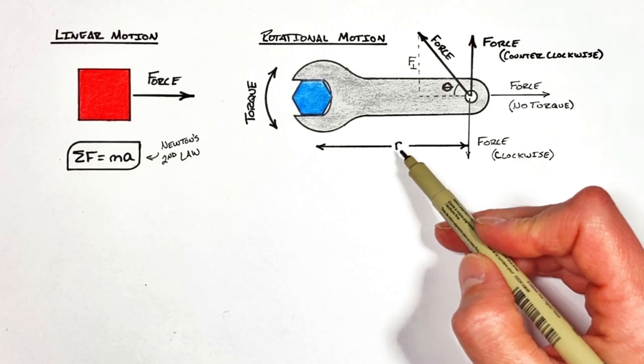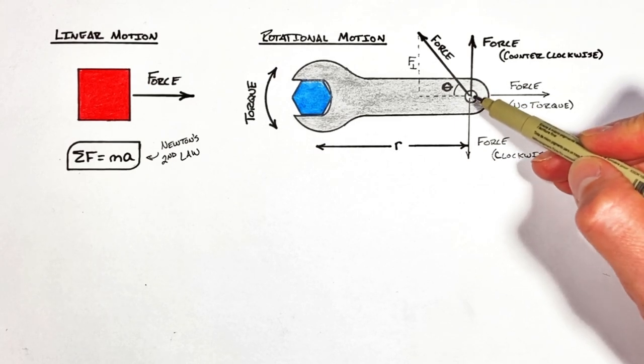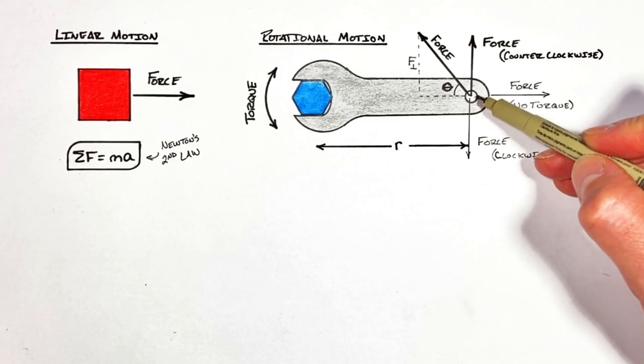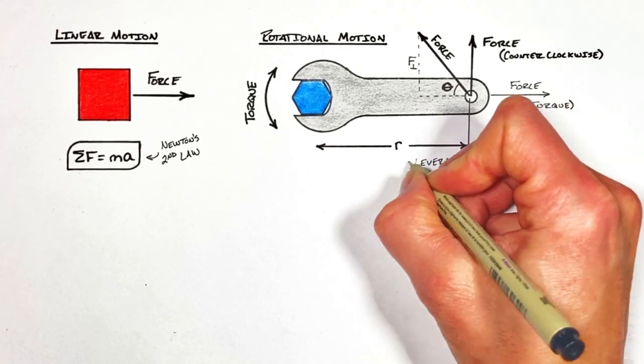But that radius is measured from the center of rotation, in this case the middle of the bolt, to wherever the force is being applied, in this case the end of the wrench. And that radius is what people typically refer to or think of as leverage.